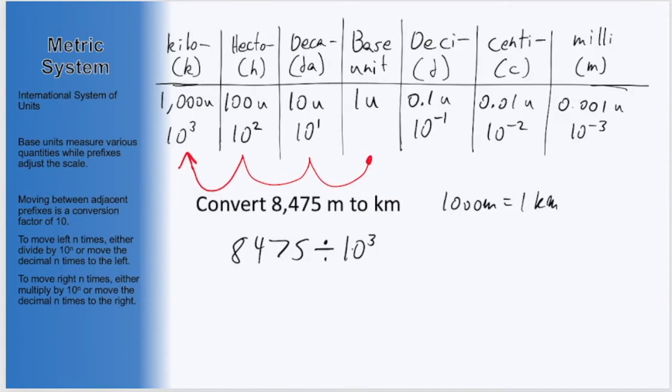Taking 8,475 and dividing by the 10 to the third, or 1000, will give us 8.475 and we are now in kilometers.